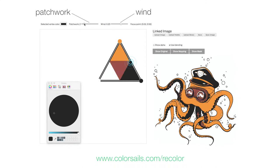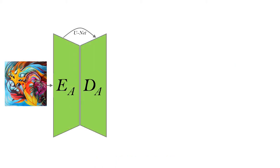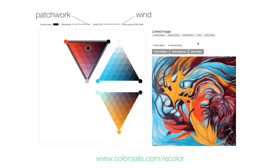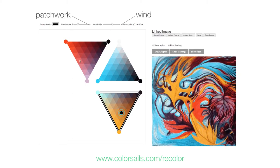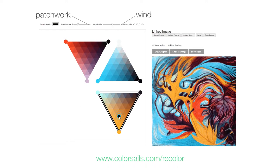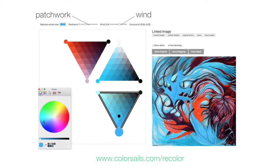We observe that a single color manifold cannot model more complex color distributions. To overcome this, we propose a deep learning architecture for automatic image compositing. Our model learns to produce alpha masks and corresponding color sails so as to best reconstruct the original image. With this, we achieve much higher representative power that can model more complex art and design images. Here are some more examples from our interface, this time with generated color sails and their alpha masks.